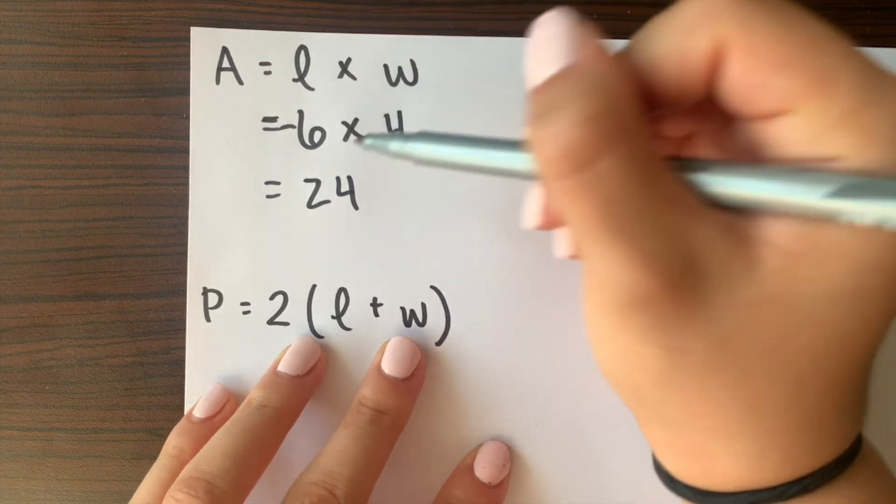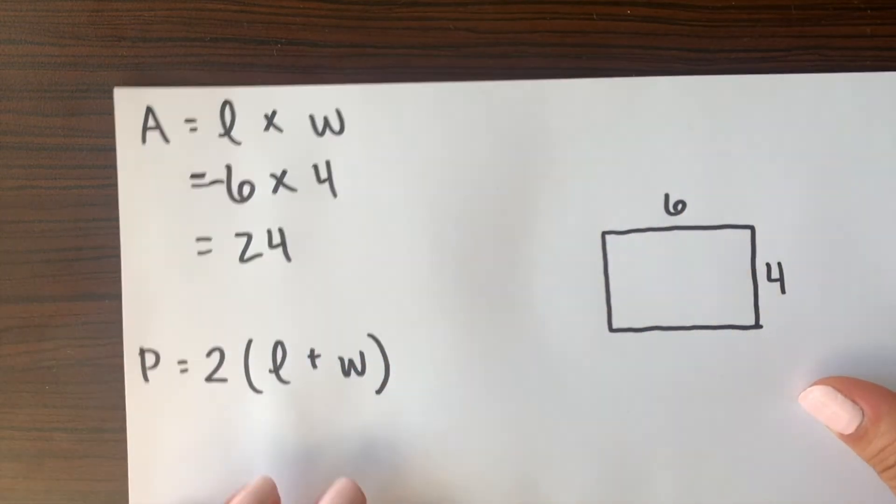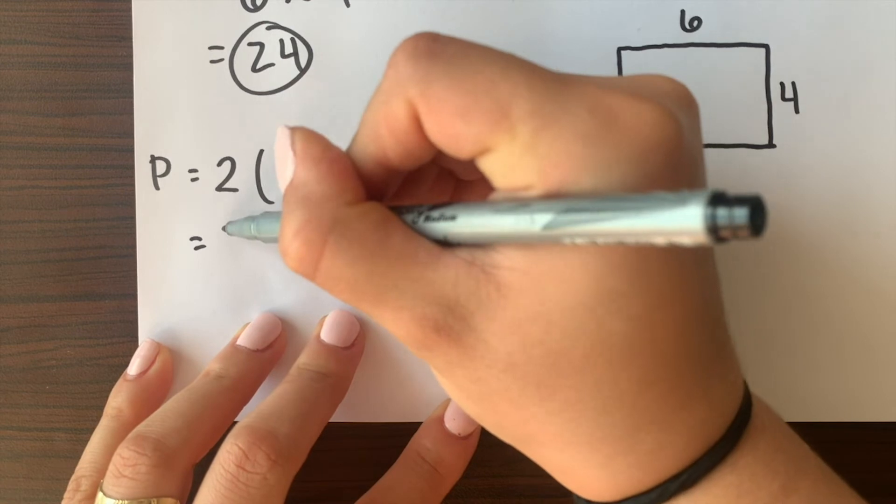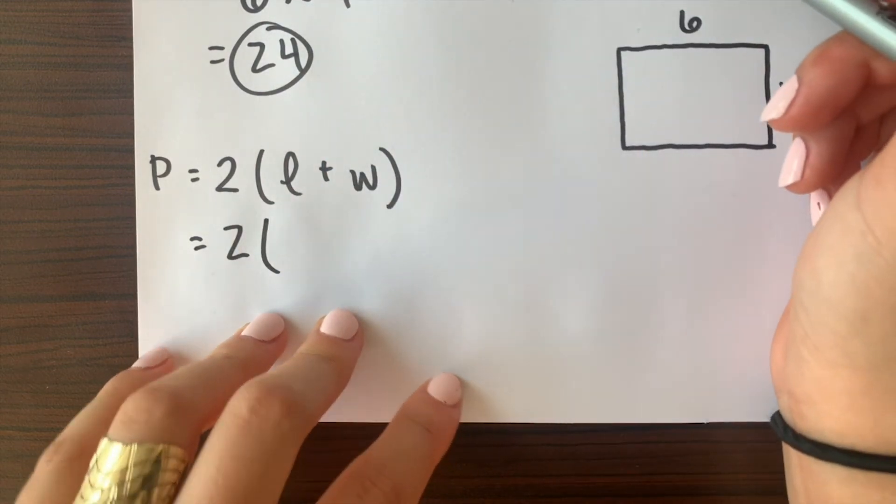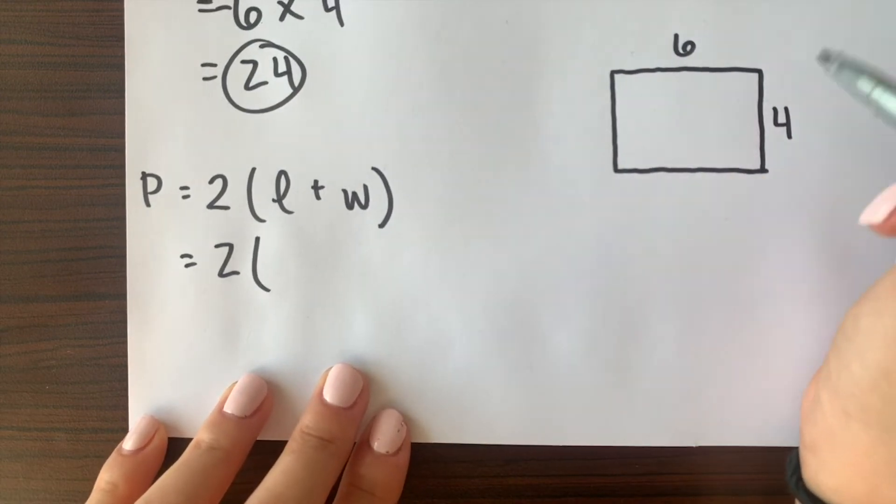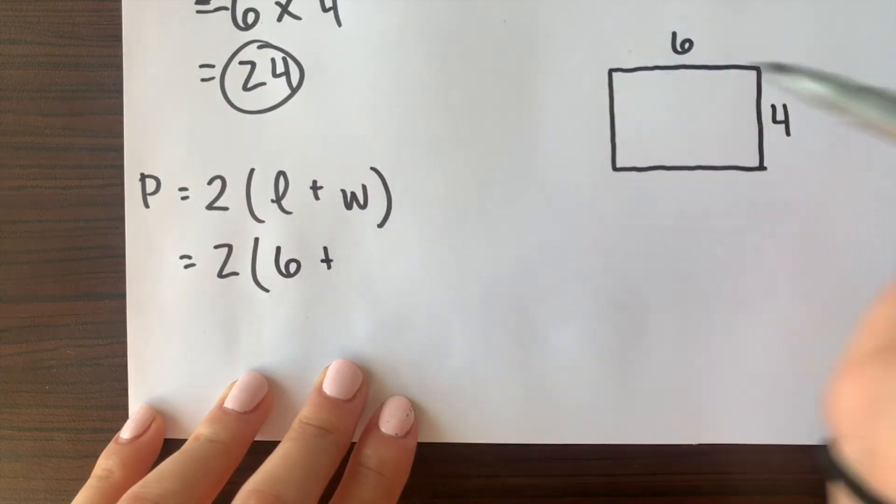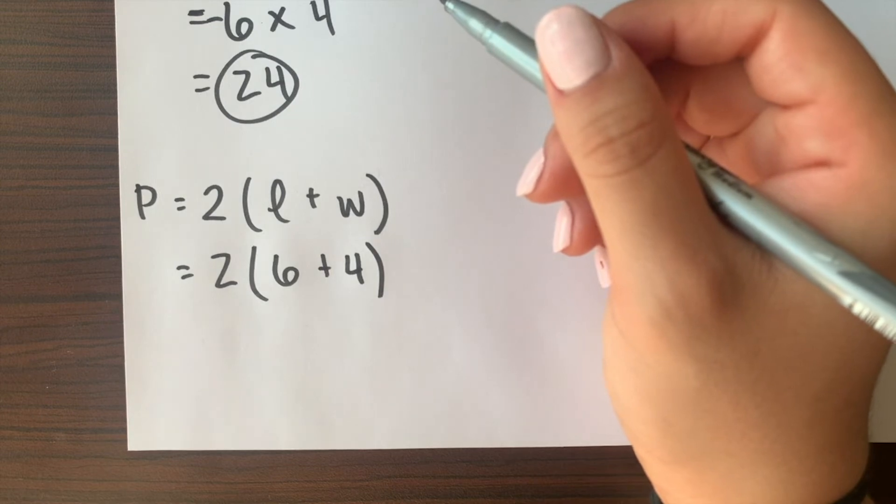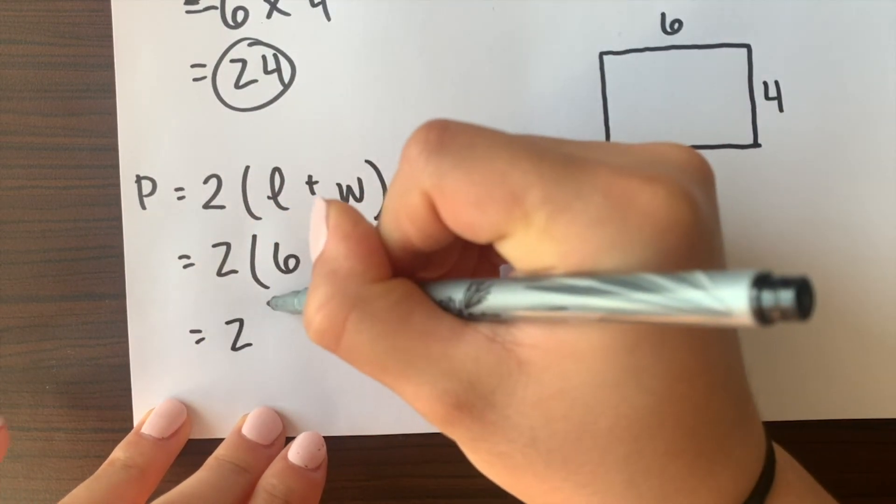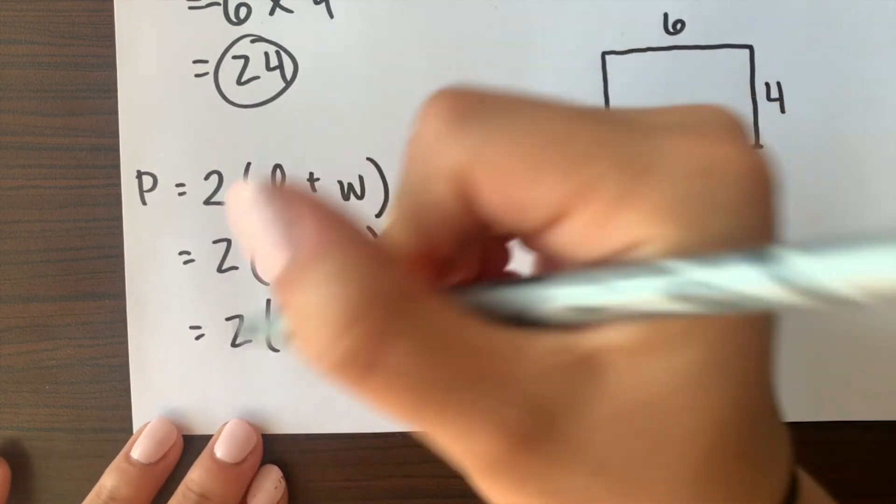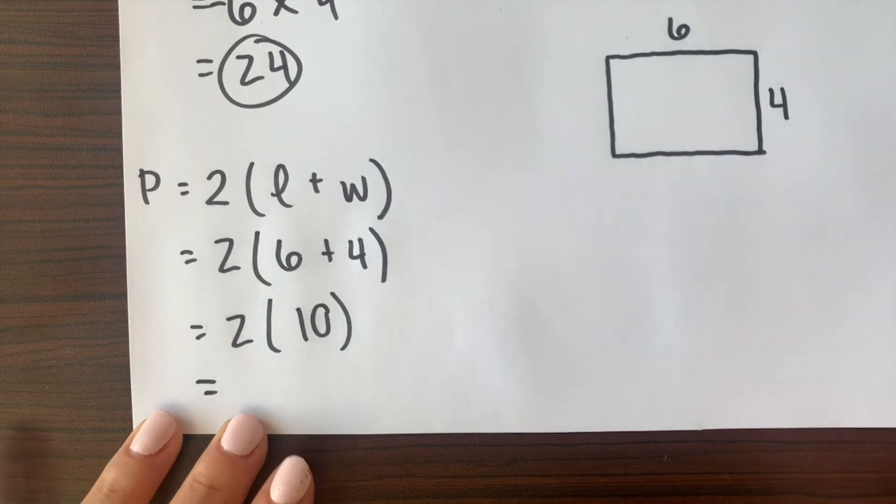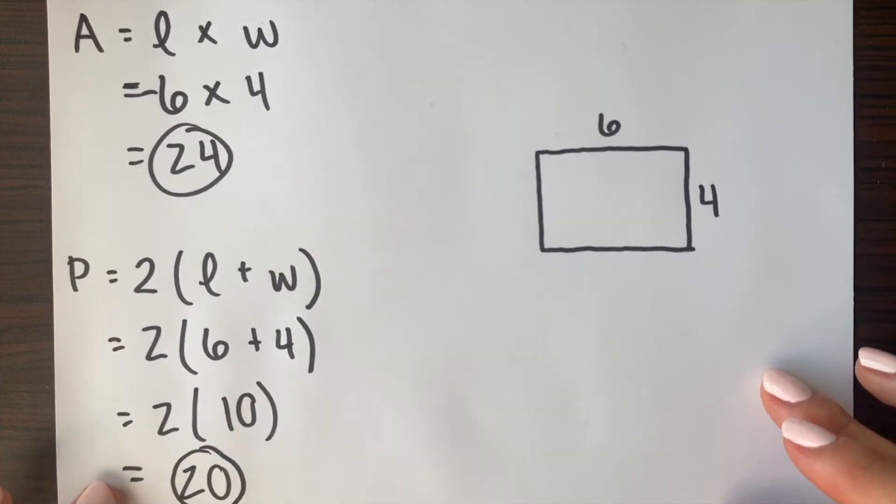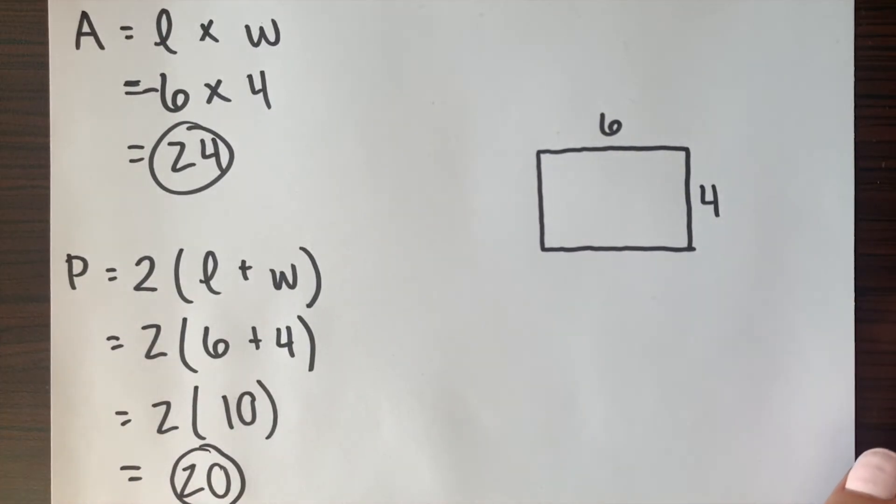That took me a minute. So now our area for the rectangle is 24 here. So now to find the perimeter again we just plug in the values for length and width. So bring down the 2. Again keep PEMDAS in mind that you have to solve what's in the parentheses before you multiply. So our length is 6 plus our width which is 4. 6 plus 4 gives you 10 and 2 times 10 gives you 20. So our area for this rectangle is 24 and our perimeter for this rectangle is 20.